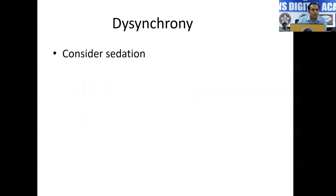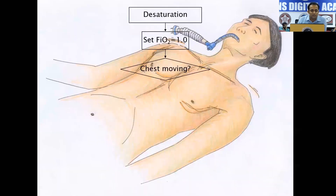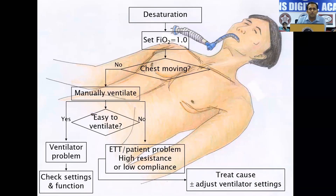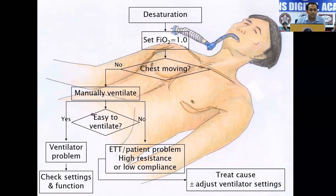If the dysynchrony is not being managed even with adjustment of ventilator mode or I:E ratio, then you will have to consider sedation. The other issue can be desaturation, wherein you have set a particular FiO2 but with that the patient is not able to maintain oxygen saturation. Immediately you make the FiO2 1 — give the patient 100% oxygen. Next thing to look at: is the chest moving? If the chest is not moving, you will have to manually ventilate the patient. Especially in COVID-19, at this step it is very important to take adequate precaution.